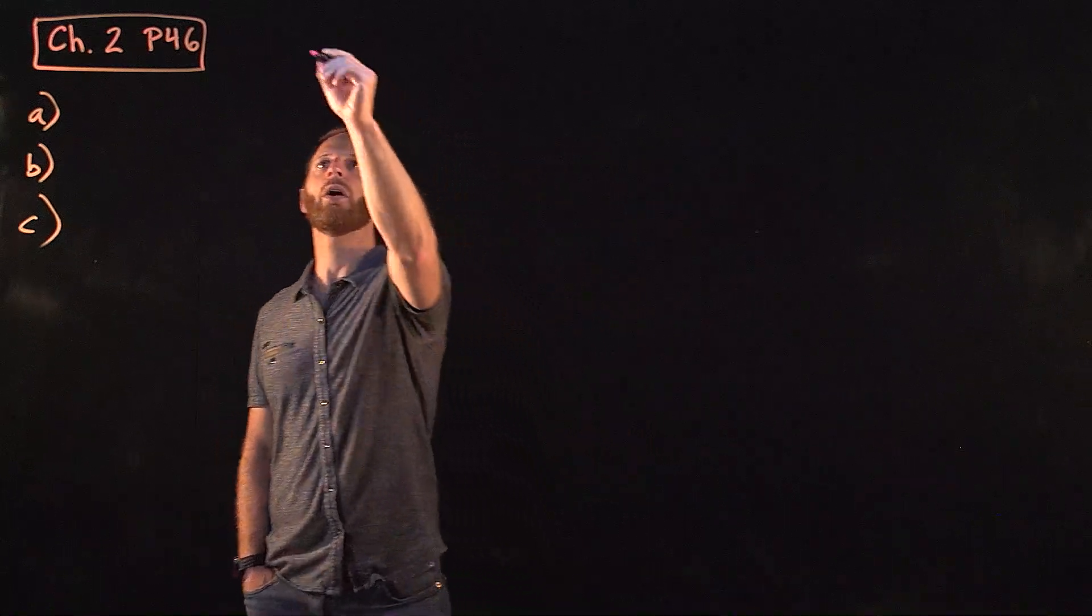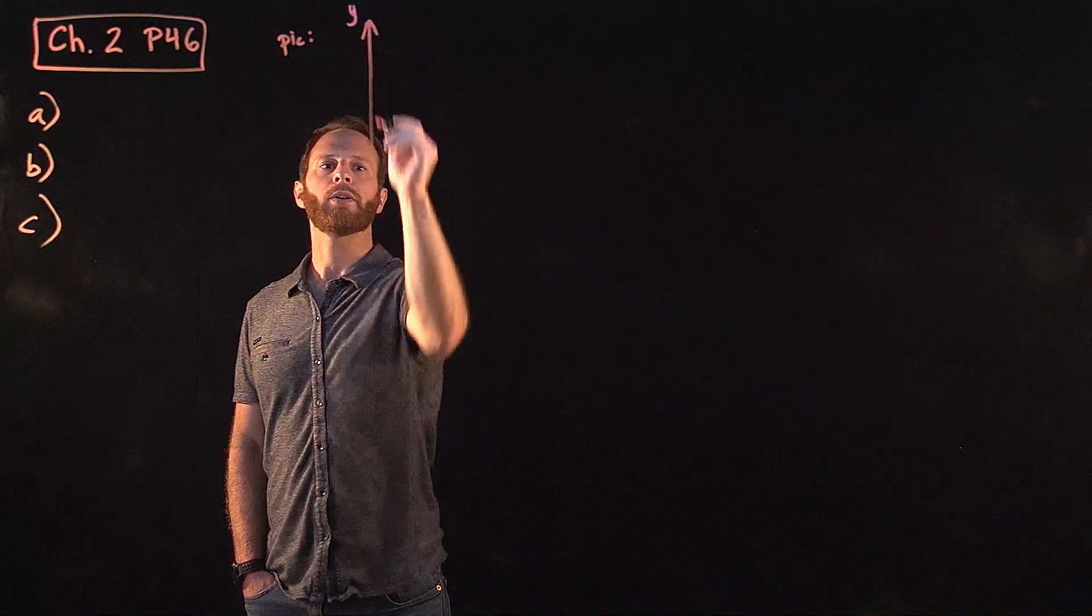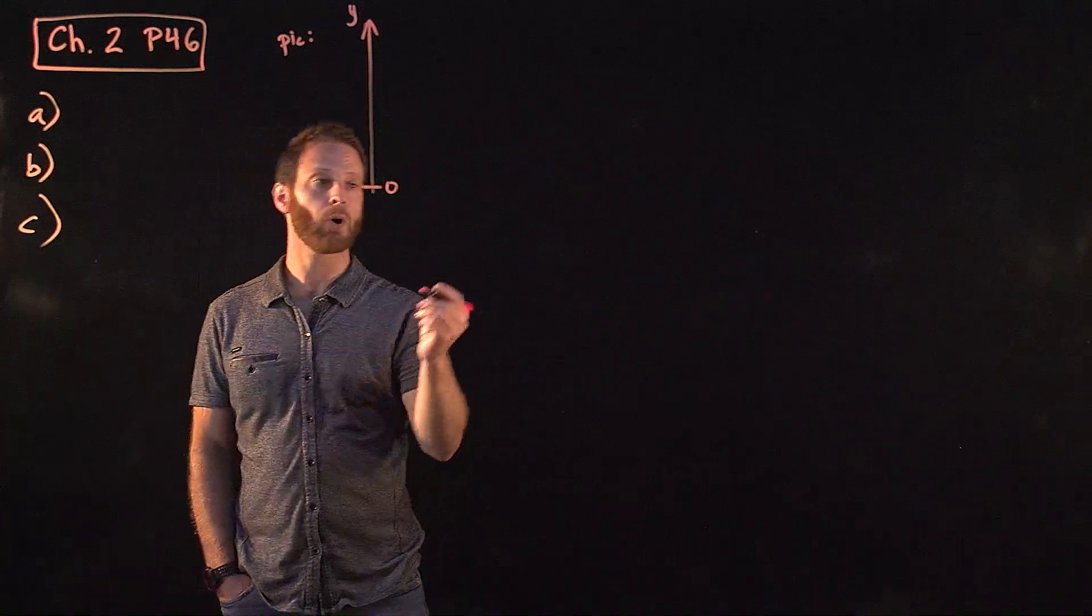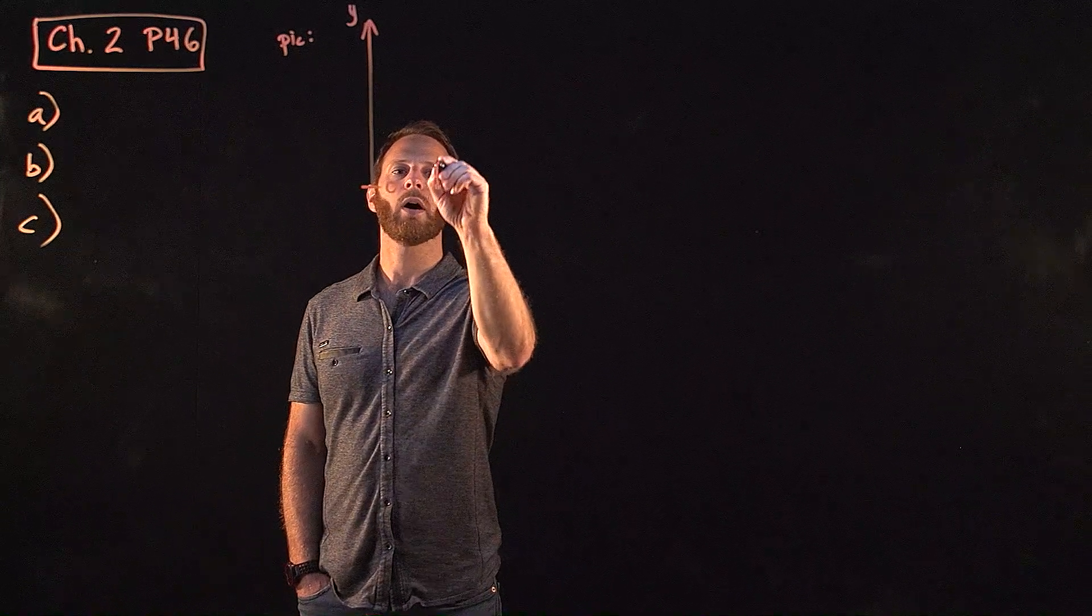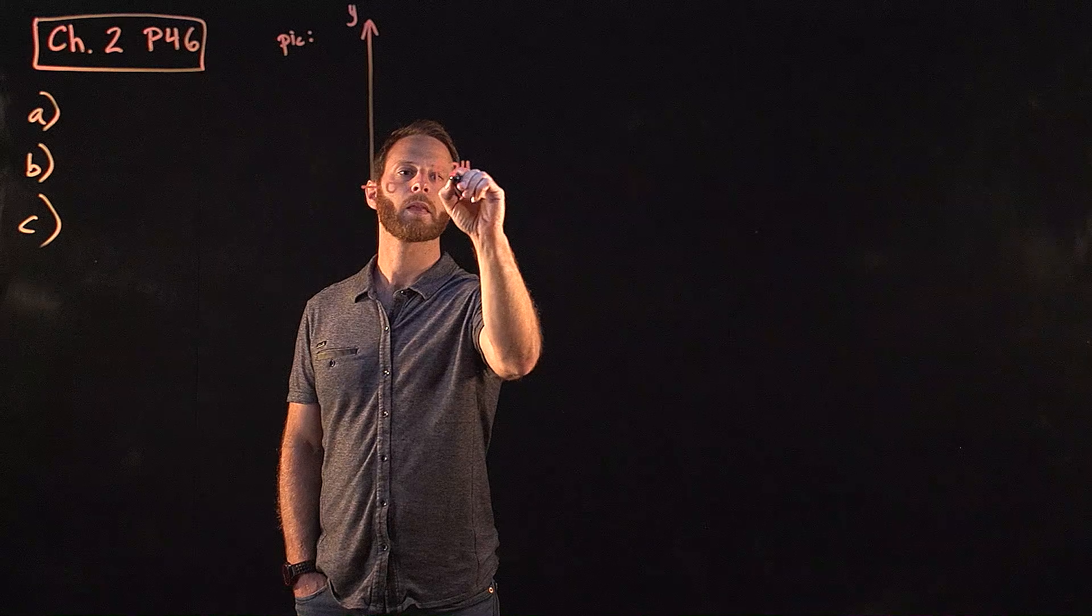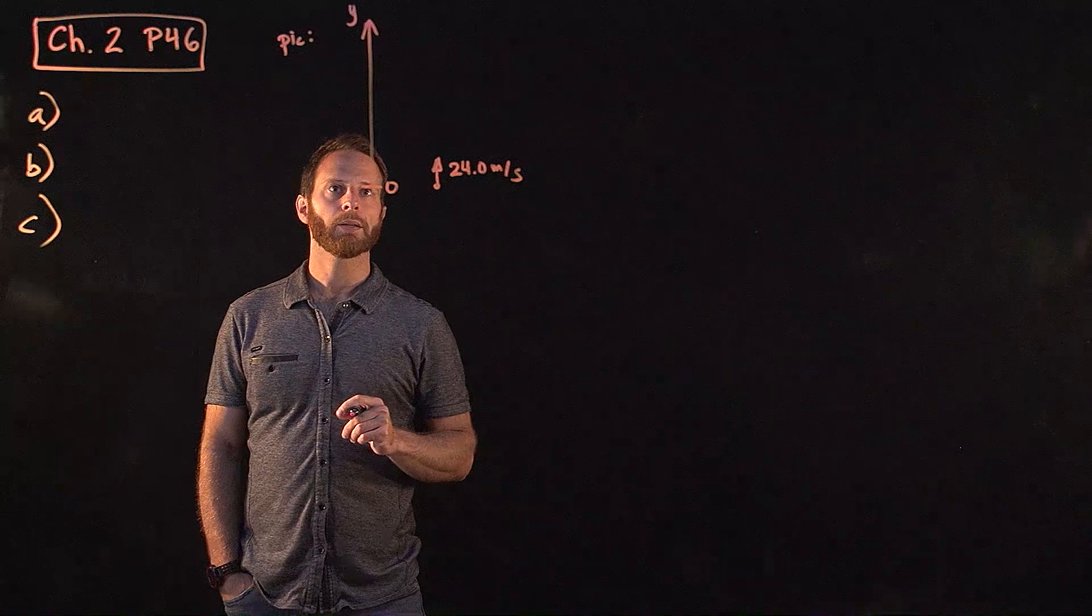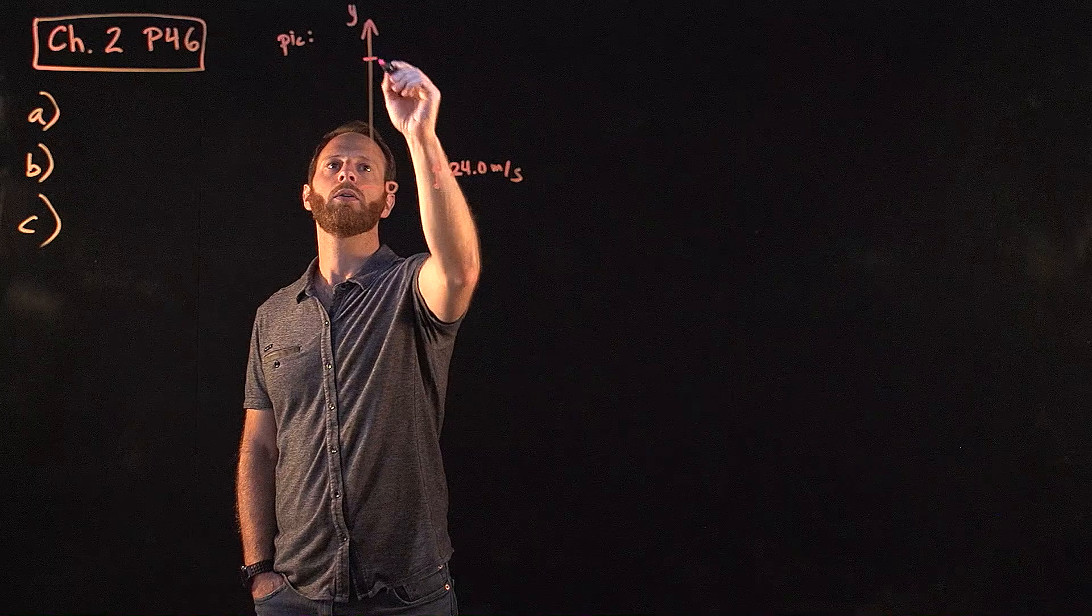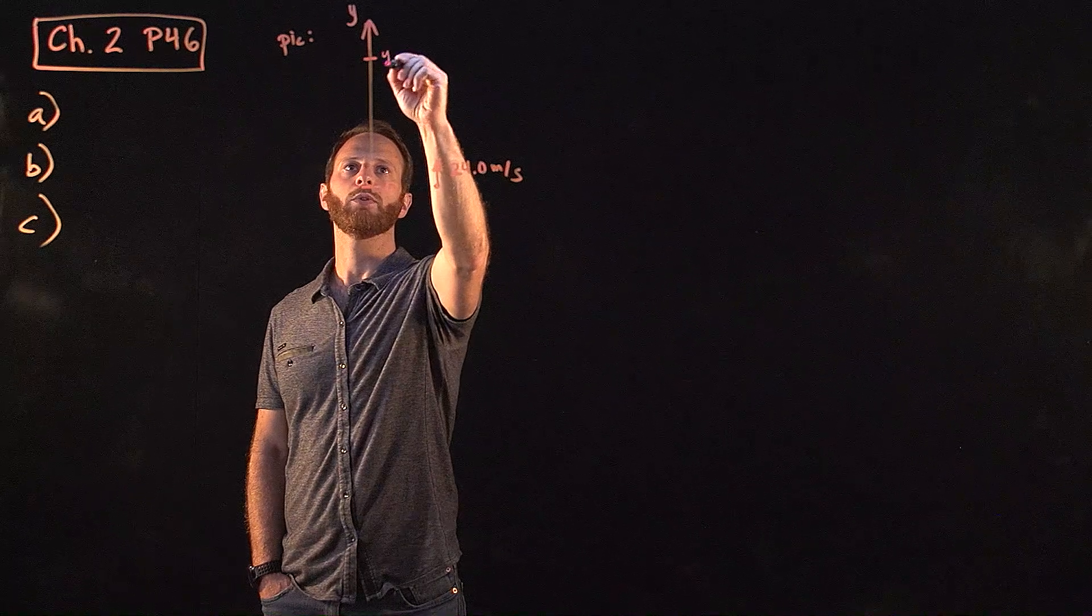So the simplest picture you might draw is this. Let's just at least draw an axis. This is the y direction, and down here will be 0. And there is the stone that's thrown from, we're supposed to assume it's thrown from the ground. So here it is, and it's on its way upward, traveling at some initial speed of 24.0 meters per second. And it's going to get to some height later on, which we might call y. So in fact, this will be y0, and this will be some later height, but we'll just label y.